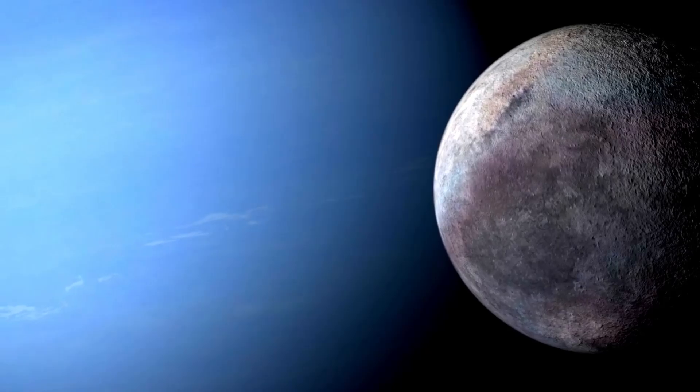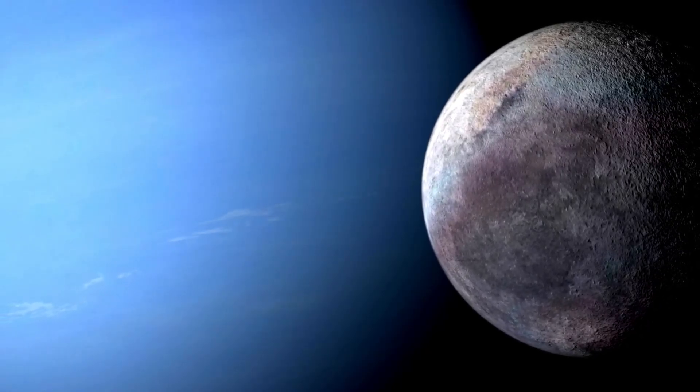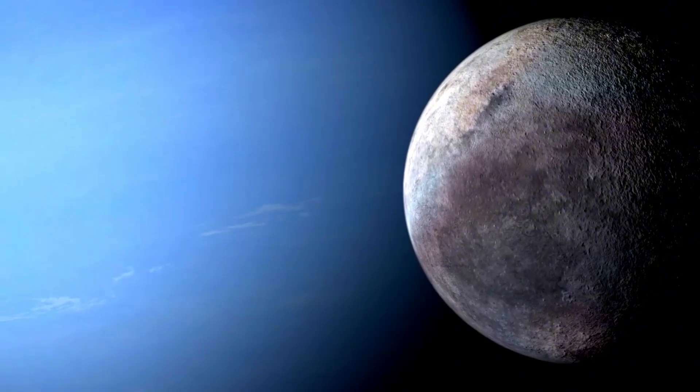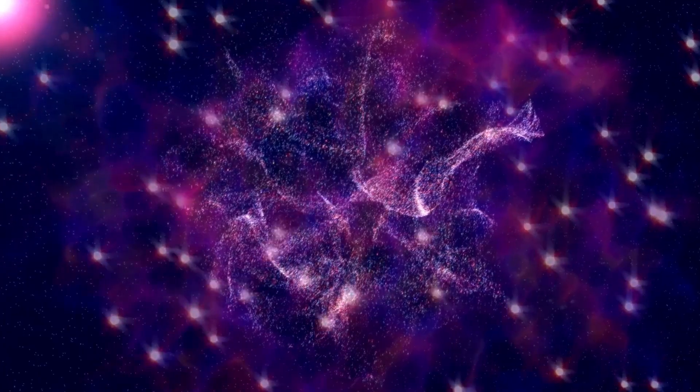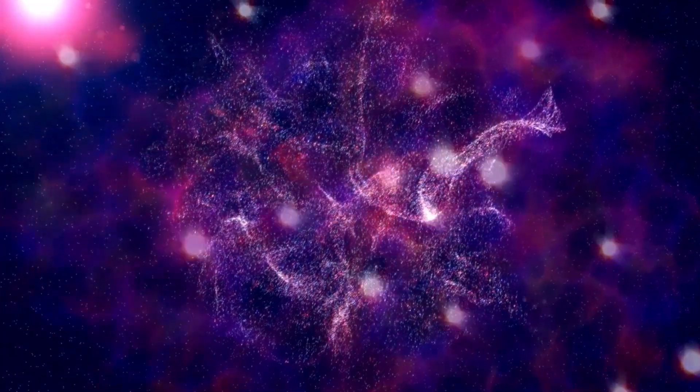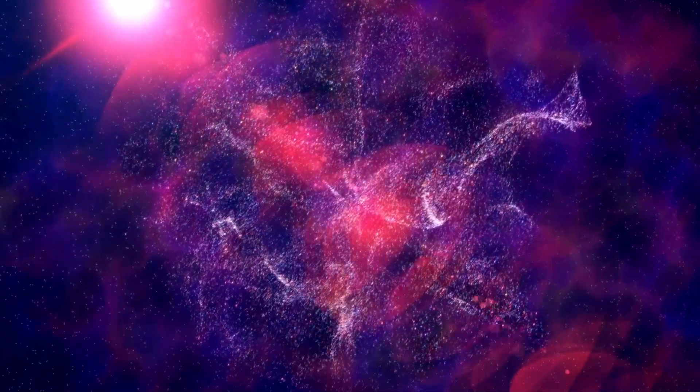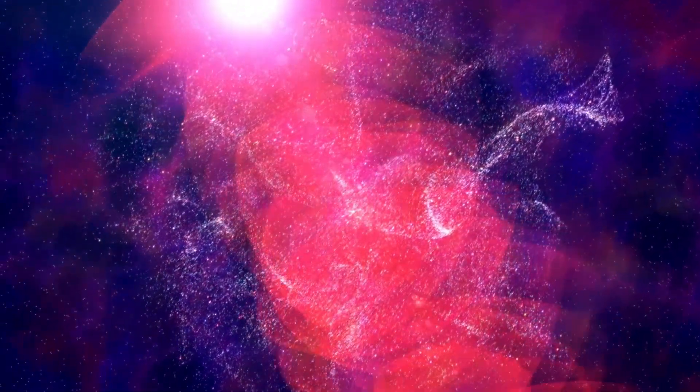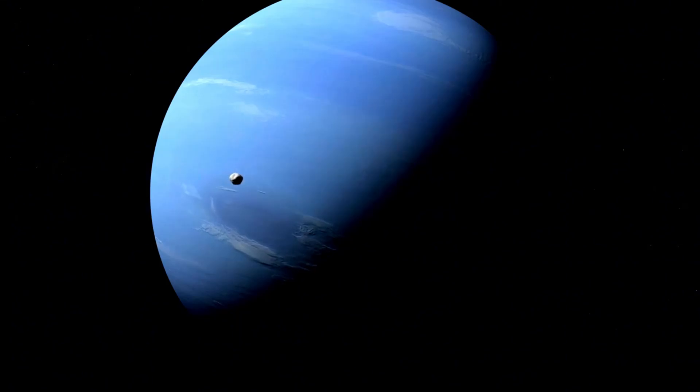Pluto's journey around the Sun is unlike any other planet in our close-by planet group. It requires a stunning 248 years to complete a single orbit. Since its discovery in 1930, it hasn't even completed one full revolution.